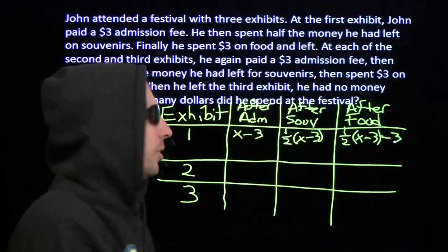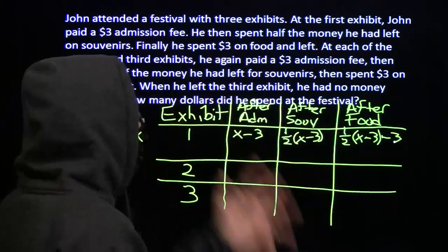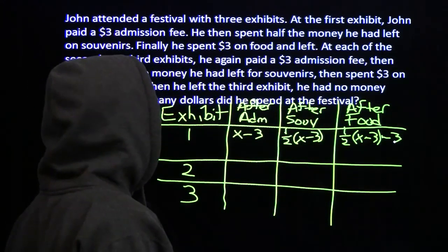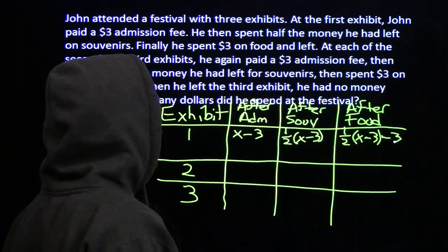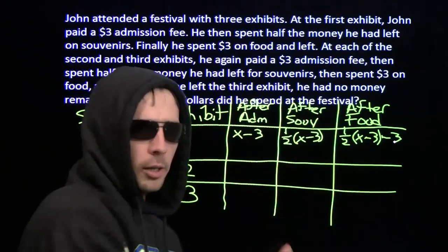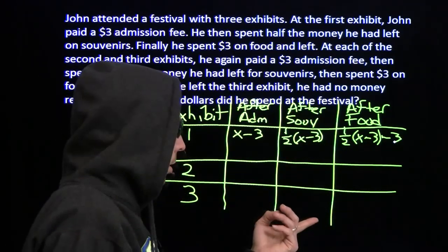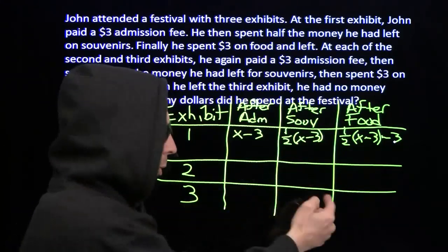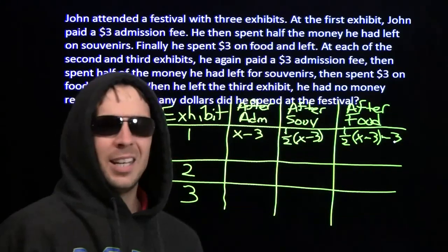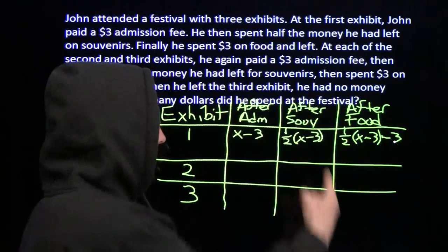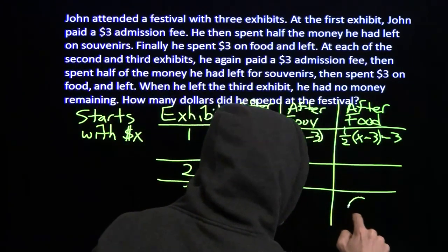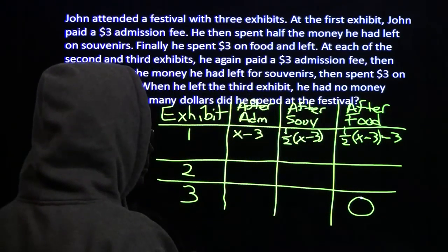I don't want to keep putting algebra expressions all over the place — there's got to be a better way. And wait a second: we already know what the value at the end is. The one at the end is zero, because my man's all tapped out. He has no money — zero at the end.